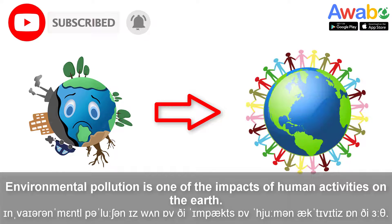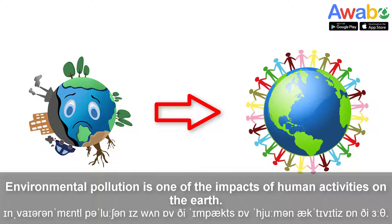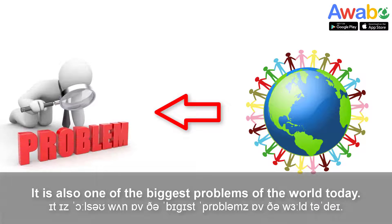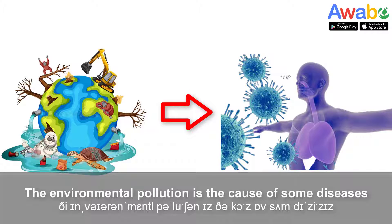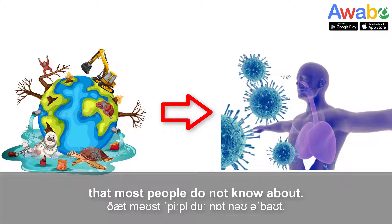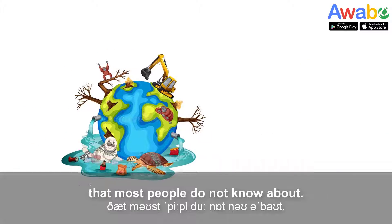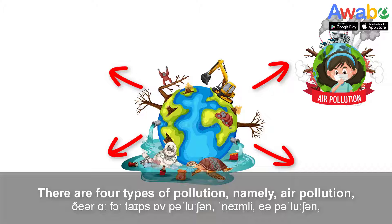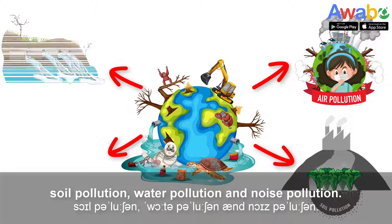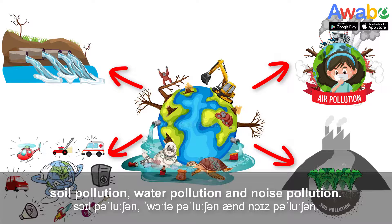Environmental pollution is one of the impacts of human activities on the Earth. It is also one of the biggest problems of the world today. Environmental pollution is the cause of some diseases that most people do not know about. There are four types of pollution, namely: air pollution, soil pollution, water pollution, and noise pollution.